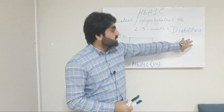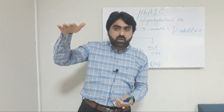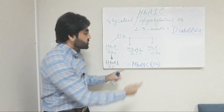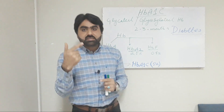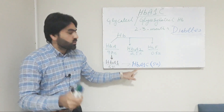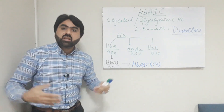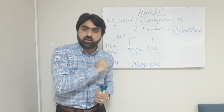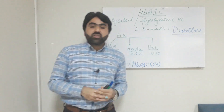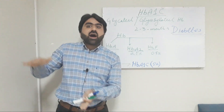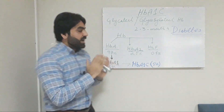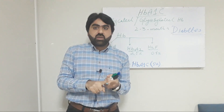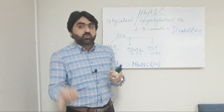Now, if the concentration of glucose is high in the blood of an individual, then more glucose will attach to the HbA1c. You can say that the attachment of glucose with HbA1c in a non-enzymatic reaction is directly proportional to the level or concentration of glucose in the blood. Therefore, in diabetes, the concentration of glucose becomes higher, so more glucose attaches to the HbA1c.